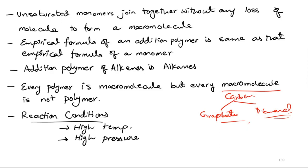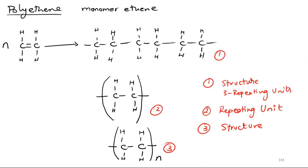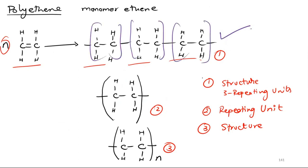The reaction conditions for addition polymerization are high temperature and high pressure. For example, polyethene: the monomer is ethene. You take n number of ethene molecules and form the polymer. When asked by the examiner to draw the structure, you can draw three repeating units, or draw just the repeating unit, or draw the full structure.